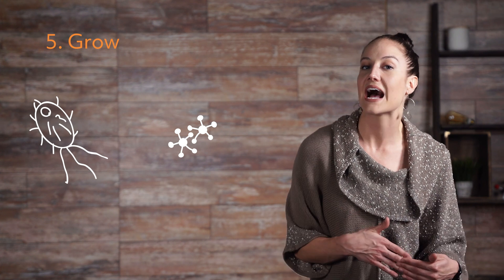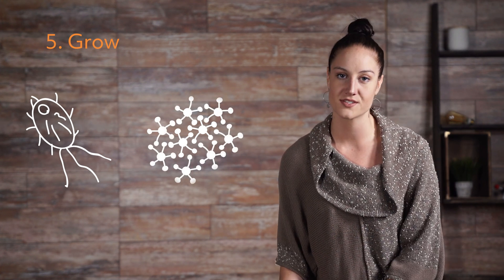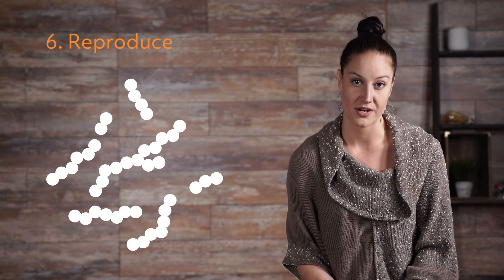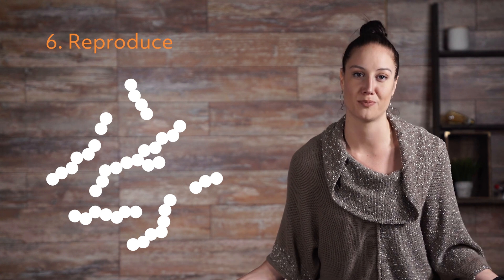5. Grow. All living organisms grow. Growth in an organism can be defined as the constant increase of size and the number of cells. 6. Reproduce. Every organism has the capability to produce offspring. Living things multiply.